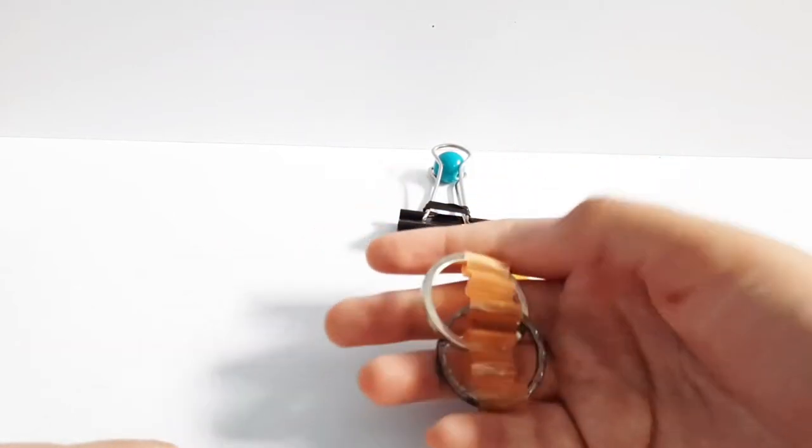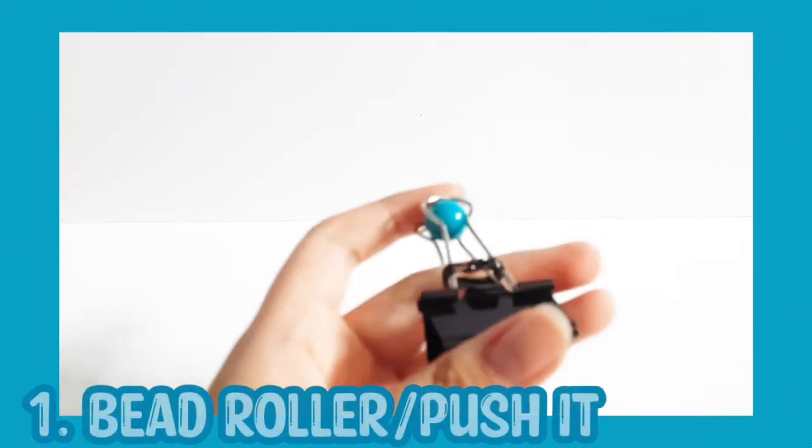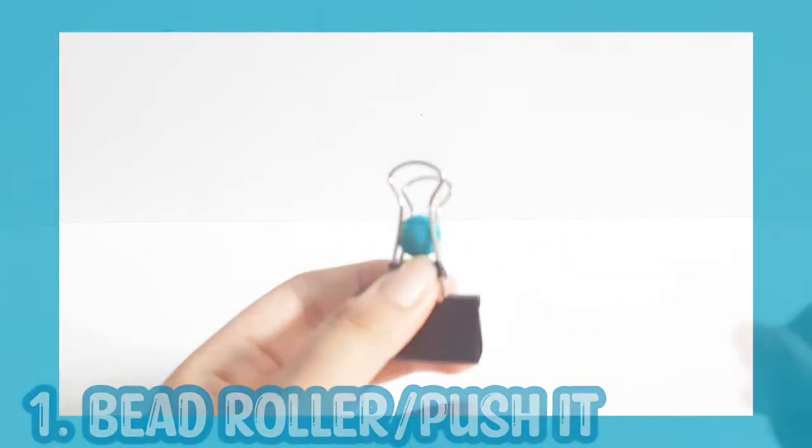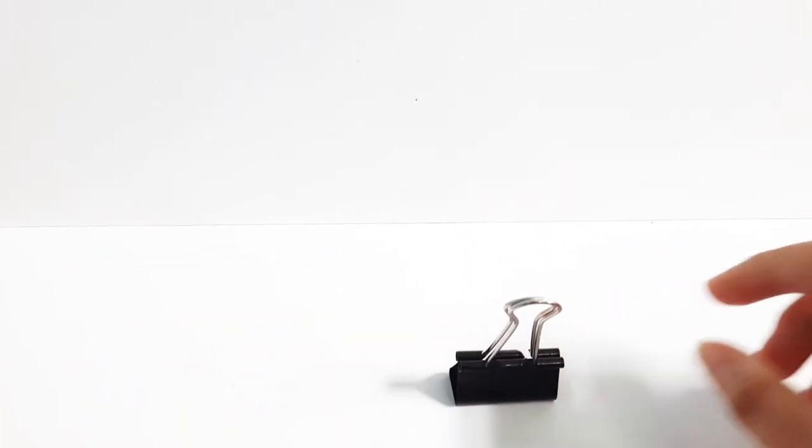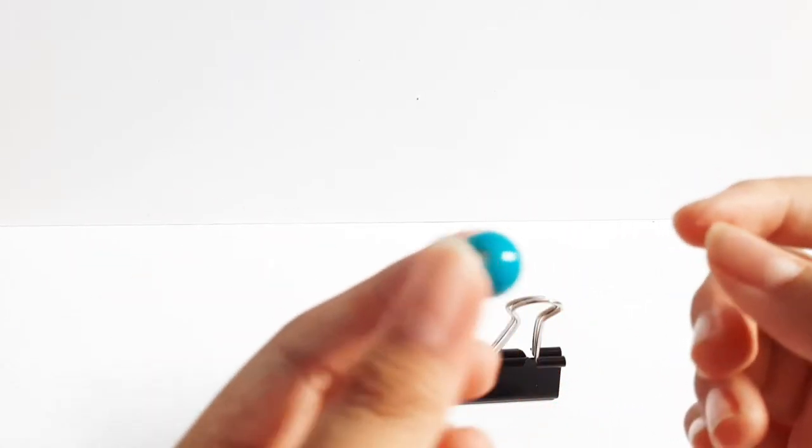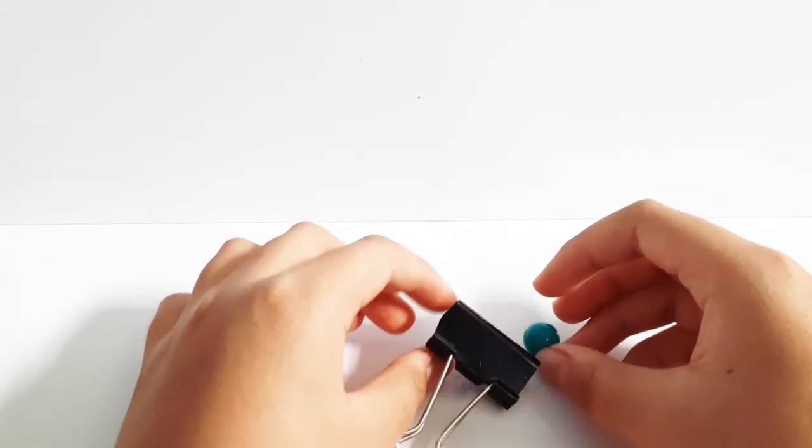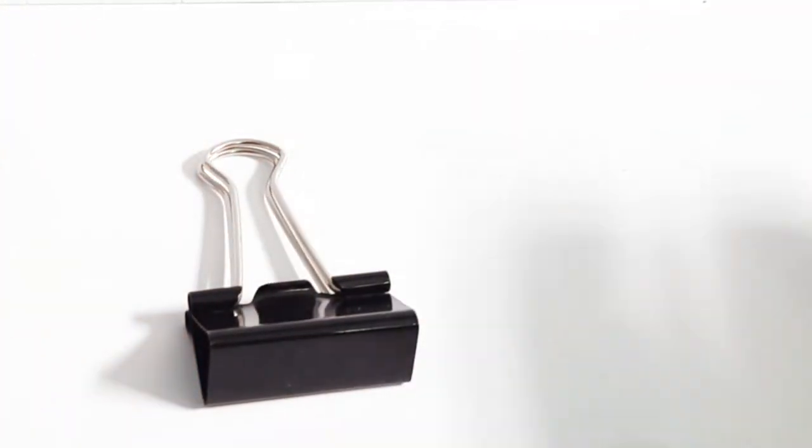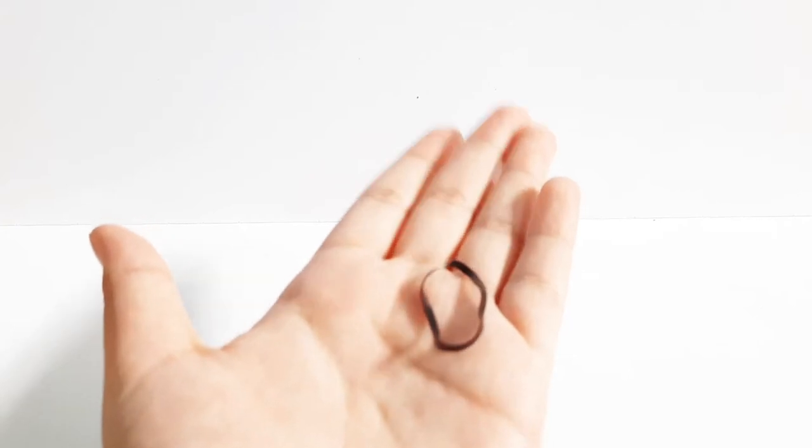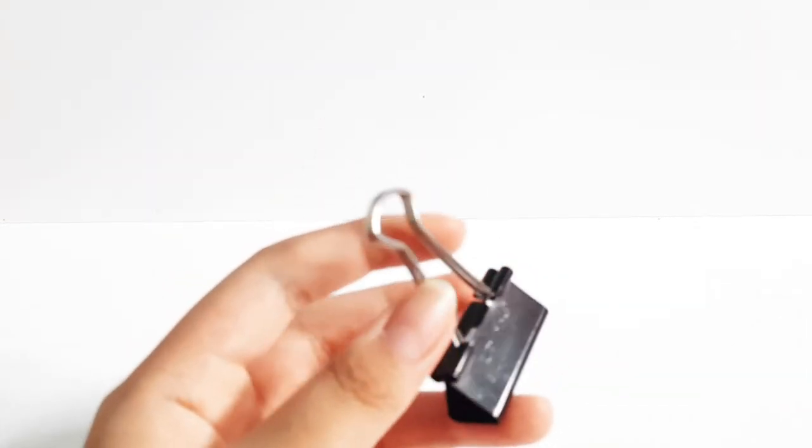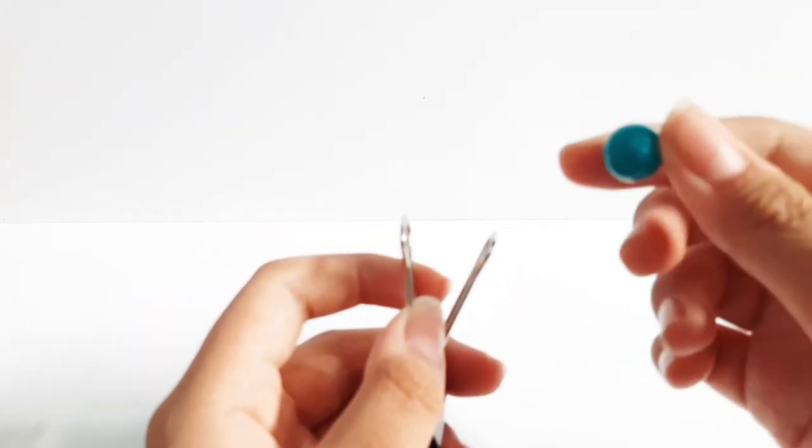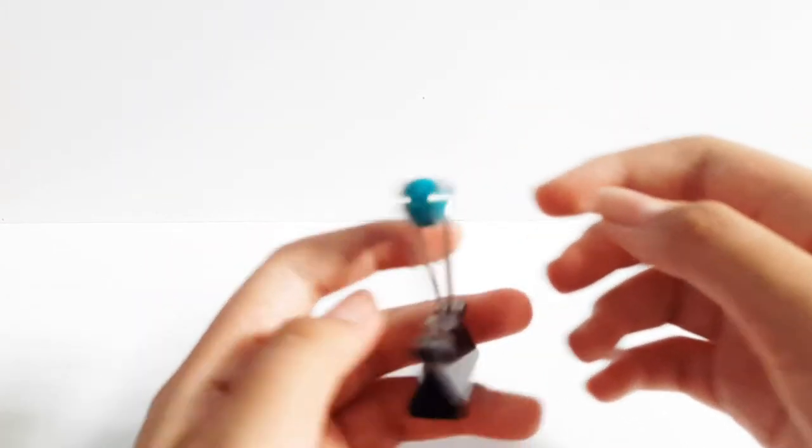Without further ado, let's get started. The things that you need to make this first fidget are a binder clip, a bead or a marble, and a little rubber band. So basically what you're going to do is open the binder clip like this, then take your marble or bead and put it inside like that.